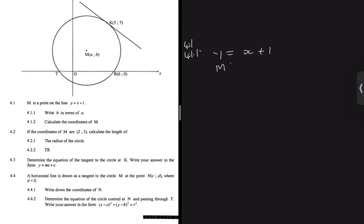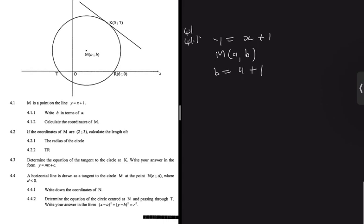For M, the x-coordinate is A and the y-coordinate is B. So if we put that into our formula, we get B in place of y equals A in place of x plus 1. So if you want to write B in terms of A, you get B equals A plus 1.